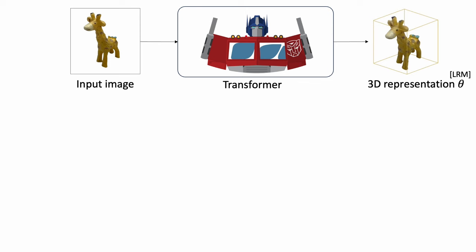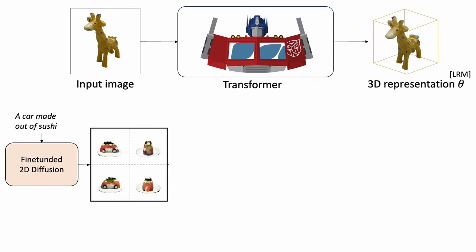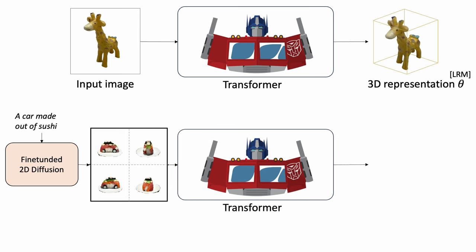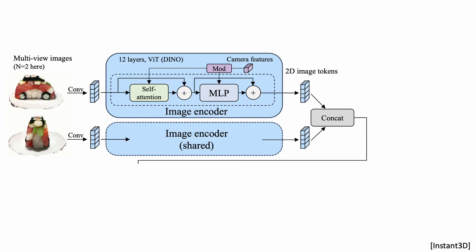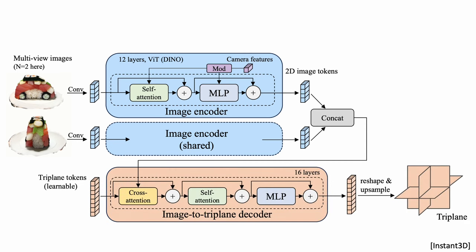Okay, this is cool, but the results are somewhat blurry. Let's use 2D diffusion models to produce multi-view images with detailed appearances, and then use the transformer to predict the 3D representation. Here's how it works. We extract image features of individual views, concatenate them together, and use the same transformer to predict the 3D.